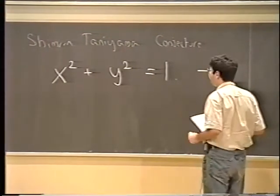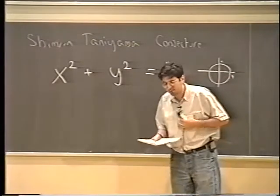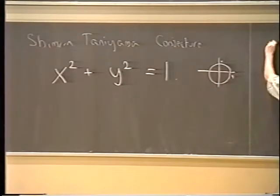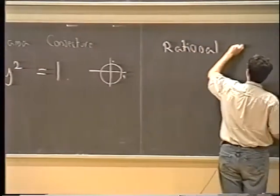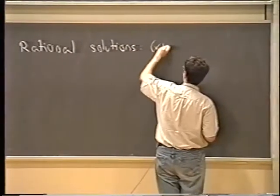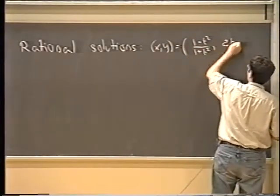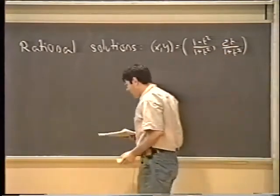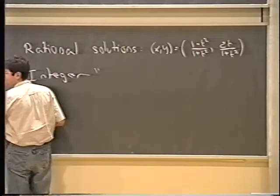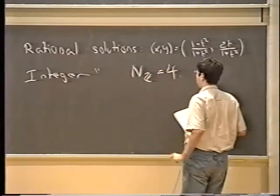As a Diophantine equation, this is very well understood. It figured prominently in Diophantus' treatise, and it was what motivated Fermat to make his generalization for higher exponents. We know what the rational solutions are — we have a parametrization: (x, y) = ((1−t²)/(1+t²), 2t/(1+t²)). The integer solutions are even easier: there are exactly four, corresponding to the four obvious points.